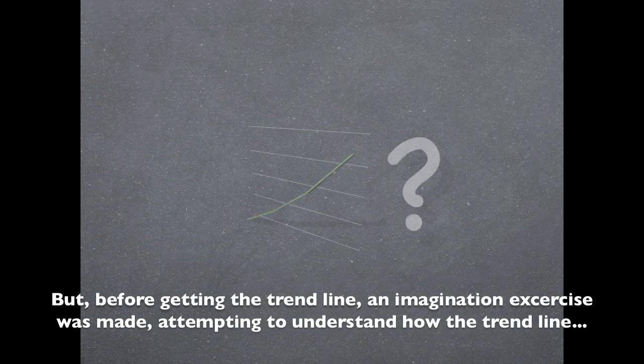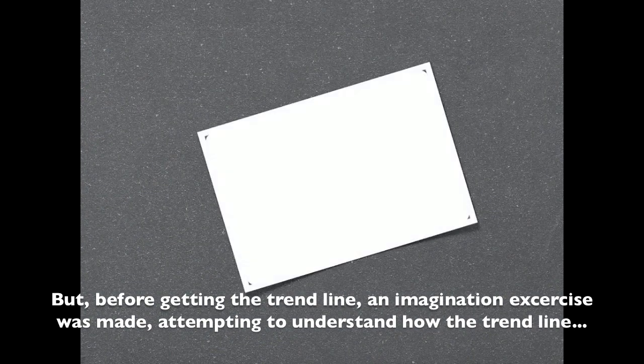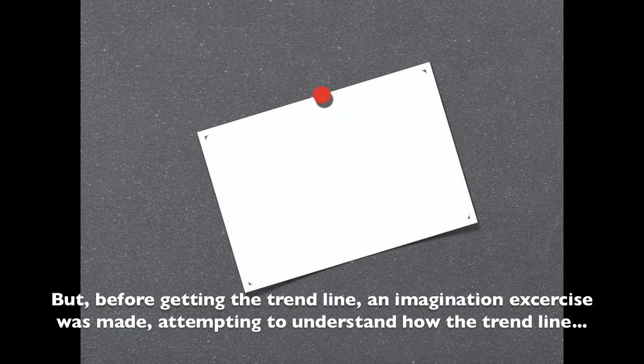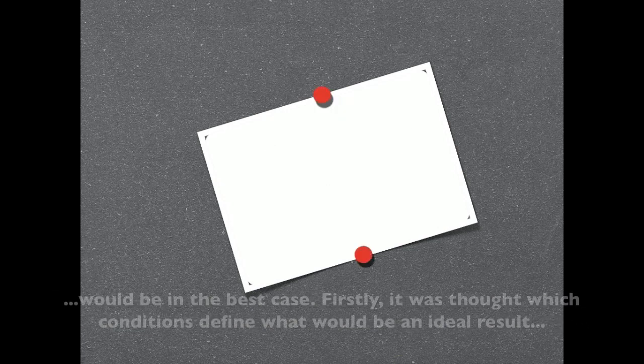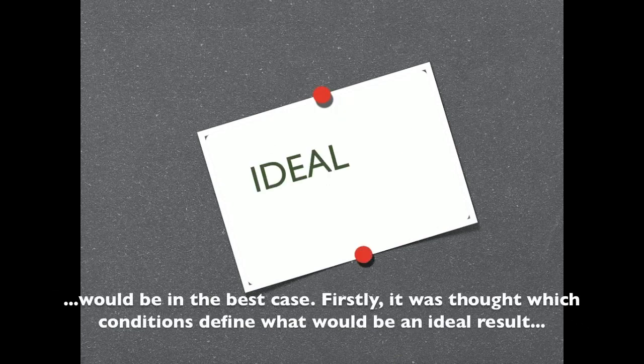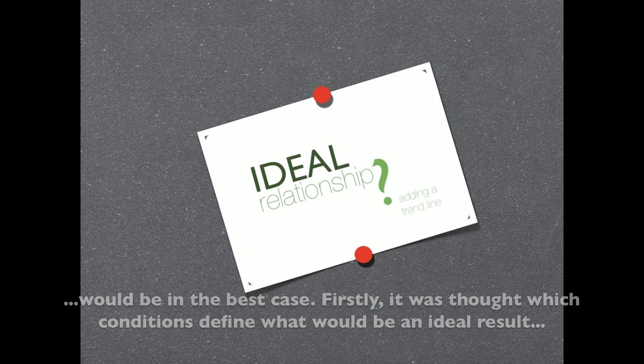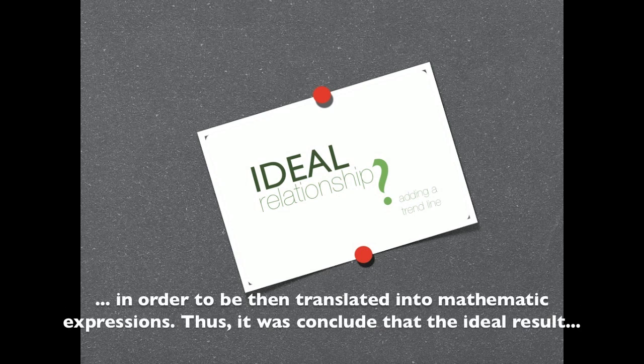But before getting the trend line, an imagination exercise was made attempting to understand how the trend line would be in the best case. Firstly, it was thought which conditions define what would be an ideal result in order to be then translated into mathematical expressions.